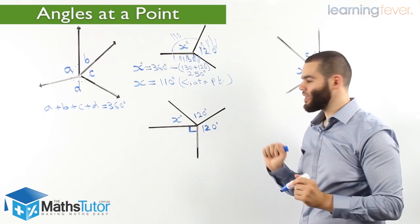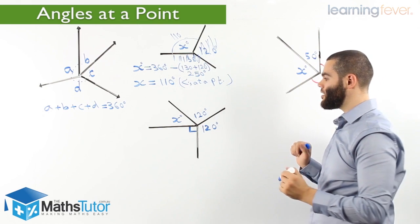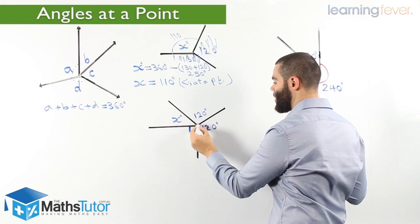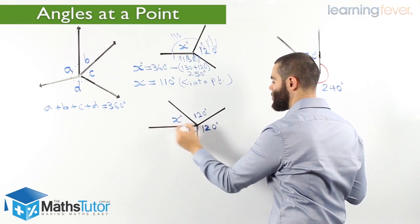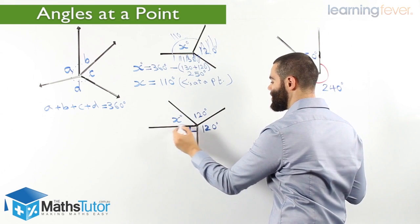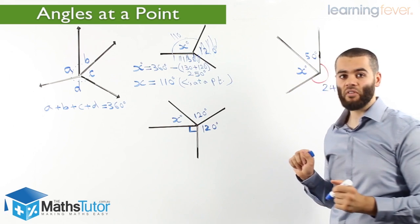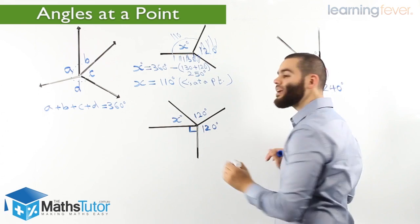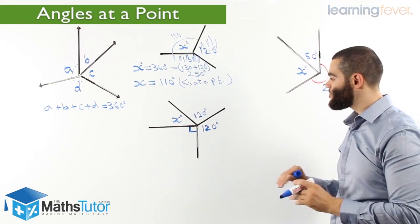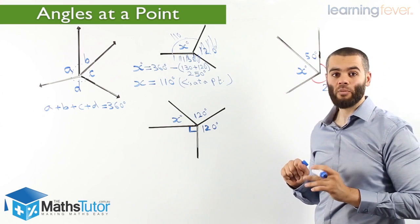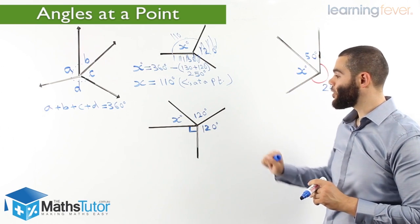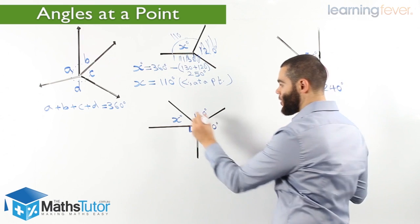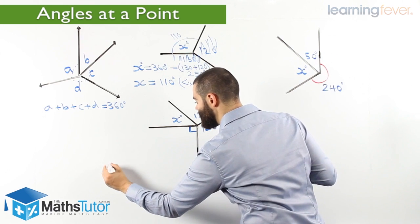This angle here, as you can see, is made up of four angles — one, two, three — and we have our 90 degrees there. So we want to work out X. We know straight away these are angles at a point; they all meet at a central point. Very important to identify that. So we want to work out X and show our working out.